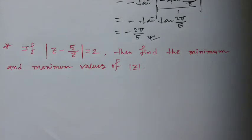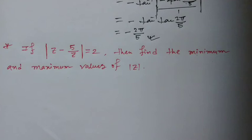Hi friends, welcome to my channel. Today I will discuss a problem related to complex numbers. The problem is: if mod of (z minus 5 by z) equals 2, then find the minimum and maximum values of mod z. Let's start the solution.